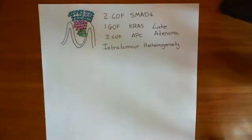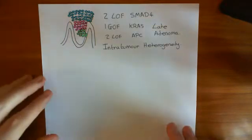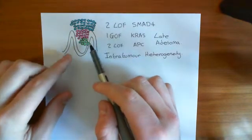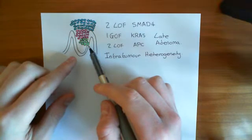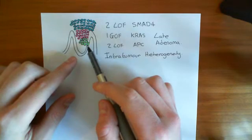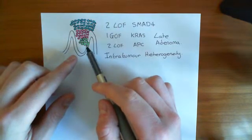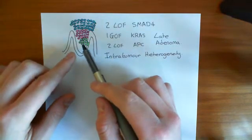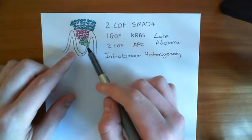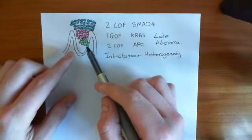Welcome to this next video on the Vogelstein model for colorectal carcinoma. So far, what we have seen is that you start off with a normal cell in the colonic epithelium. This first cell is unlucky enough to suffer two loss-of-function mutations in the APC gene, leading to it over-dividing and creating a whole population of genetically identical cells which all have loss of function in both APC genes.